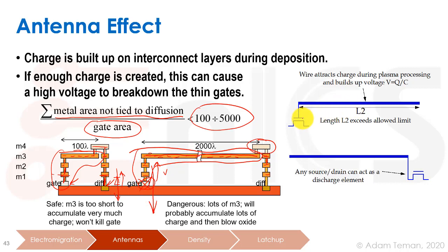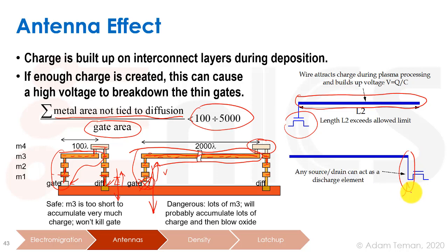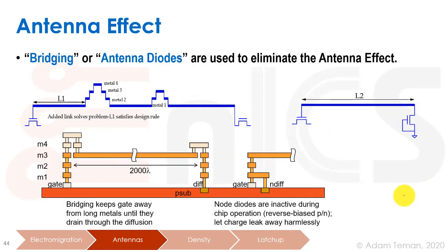To fix antenna violations, we look at the transistor's gate and measure the amount of metal connected to the gate without a diffusion connection. Once we have a connection to a diffusion, the current can break down through the diode without ruining the circuit. The easiest fix is to use short wires, but when we can't avoid long wires, one approach is bridging. Here we have a diffusion and a gate with a wire connecting them, and we ensure that close to the gate we bridge up to a higher metal layer.